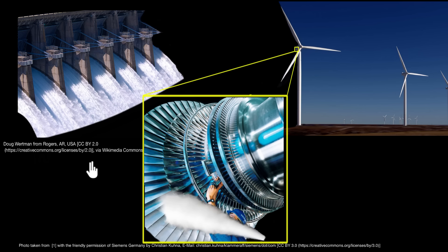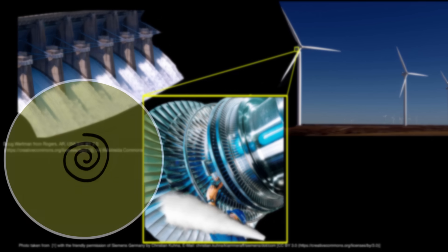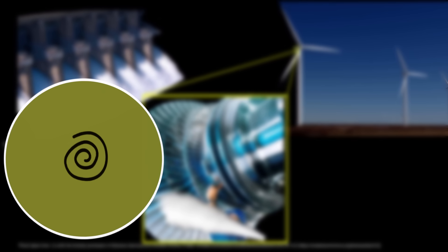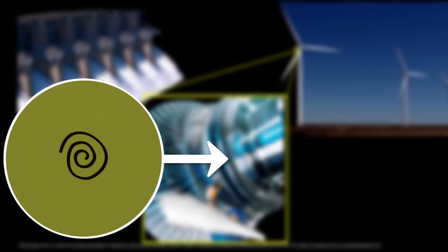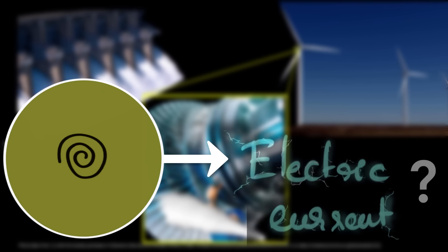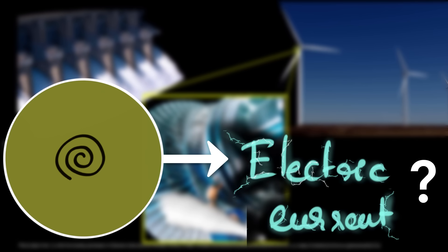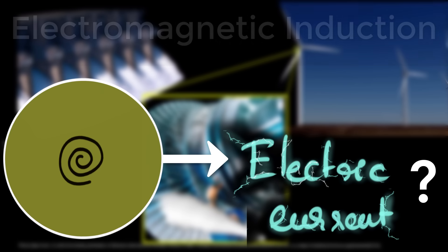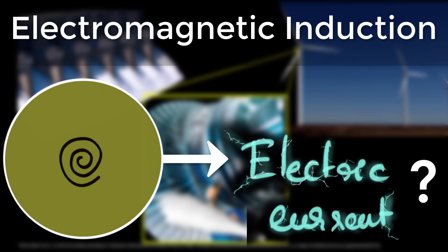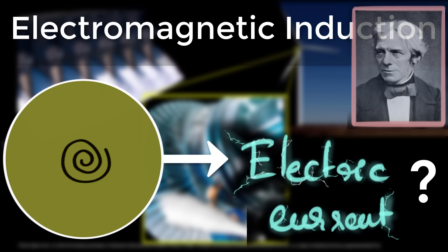Whichever way you choose, all we do is spin a giant turbine. But how does turning something create electricity? Well, the technology is based on electromagnetic induction, discovered by Michael Faraday more than 200 years ago.